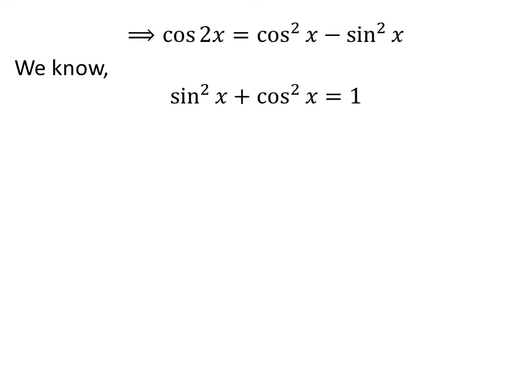We know the trigonometry identity sin squared x plus cos squared x equals 1. So, sin squared x equals 1 minus cos squared x.